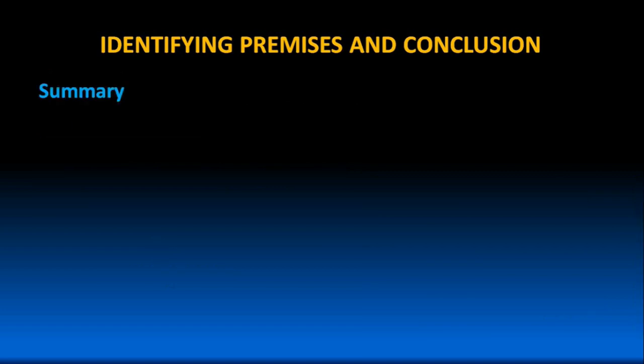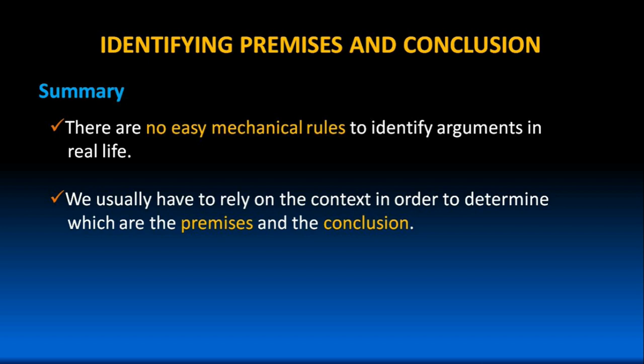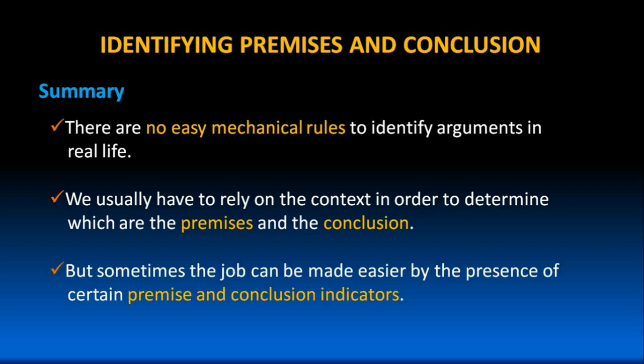Now, let us go through a summary on identifying premises and conclusion. There are no easy mechanical rules to identify arguments in real life. We usually have to rely on the context in order to determine which are the premises and the conclusion. But sometimes the job can be made easier by the presence of certain premise and conclusion indicators.